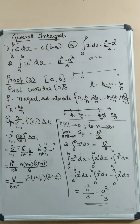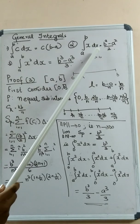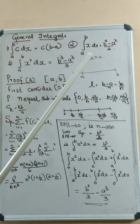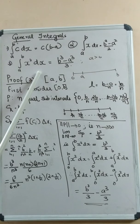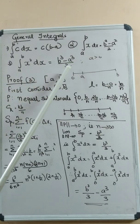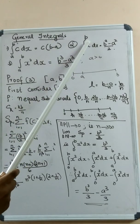In this section, we are going to prove three general integrals. The first is: integral from A to B of C dx equals C times (B minus A). The second is: integral from A to B of x dx equals (B squared minus A squared) divided by 2. The third is: integral from A to B of x squared dx equals (B cubed minus A cubed) divided by 3. Here A is a positive number and A is less than B.